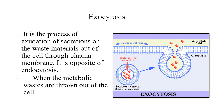Exocytosis is the process of expulsion of secretions or waste materials out of the cell through the plasma membrane. Just before this, we saw endocytosis — material taken inside the cytoplasm. Here, from the cytoplasm, the material goes outside through the plasma membrane, which is opposite to endocytosis. When metabolic waste is thrown out of the cell, excretion takes place. In the diagram, the waste material is secreted, moves near the cell membrane, and is expelled outside. This is the exocytosis process.